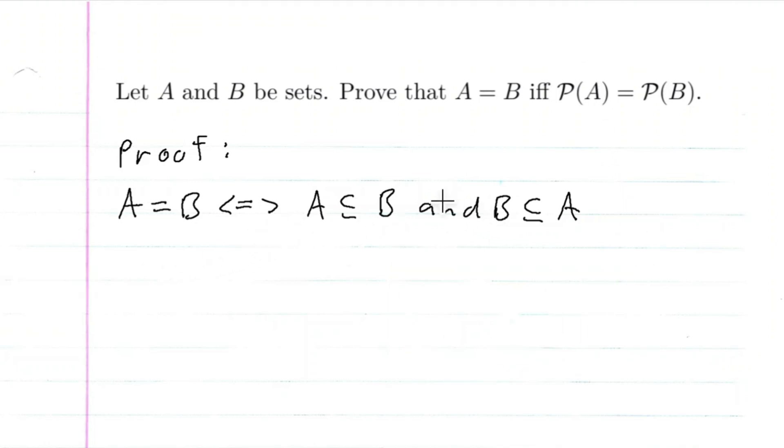Okay, so we've proven earlier that this means we have an if and only if. If A is a subset of B, this means that the power set of A is a subset of the power set of B, and the power set of B is a subset of the power set of A, right?